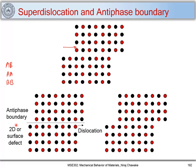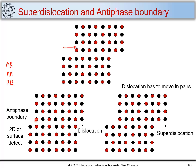Now let's look at another scenario where we move the top crystal by one more unit. This restores the original structure and removes the antiphase boundary. This total displacement is called a super dislocation, while each individual unit displacement is called a partial dislocation. To retain the ordered crystal structure, the dislocation has to move in pairs — two displacements are needed — and this paired dislocation is called a super dislocation.